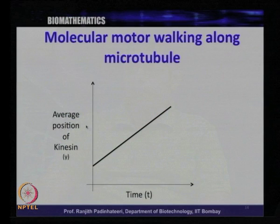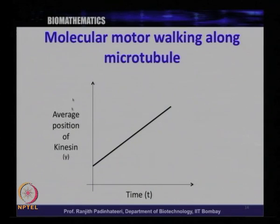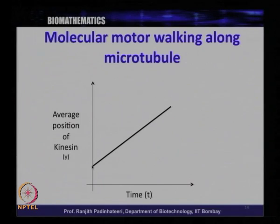The next example is a biological one: a molecular motor. You might have heard of molecular motors like kinesin and dynein. Every cell has certain motors — like trucks in real life — they carry cargo from one part of the cell to the other. We are looking at the motion of these motors. What is plotted in this graph is the average position of a particular motor called kinesin on the y axis as time progresses.